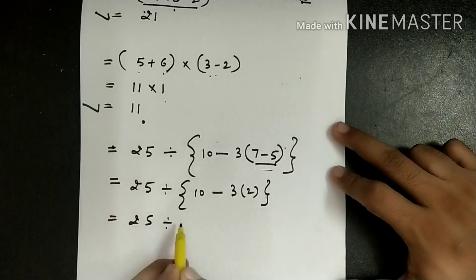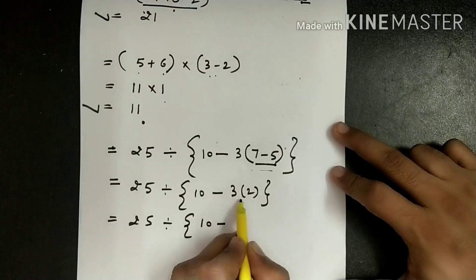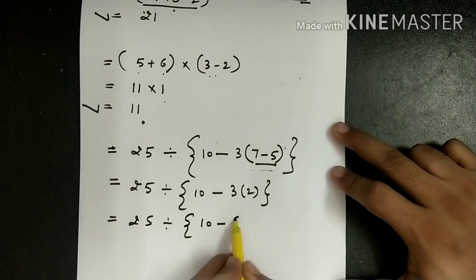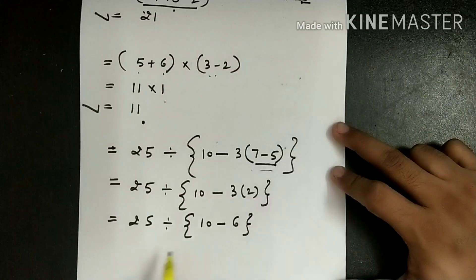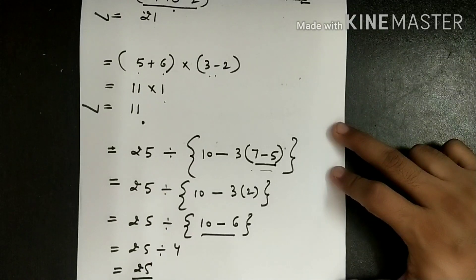So this will come as 25 divided by 10 minus 3 into 2 is 6. 25 divided by 10 minus 6, 10 minus 6 is 4, so the answer is 25 divided by 4.